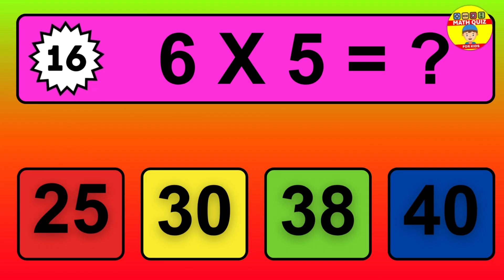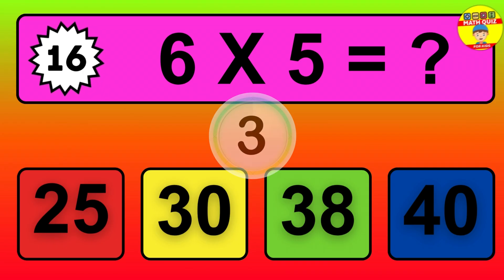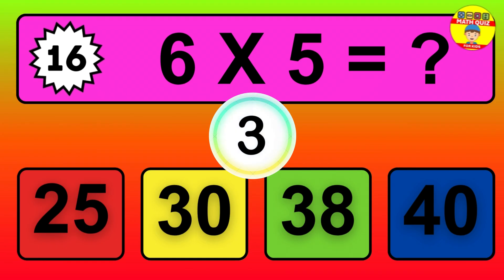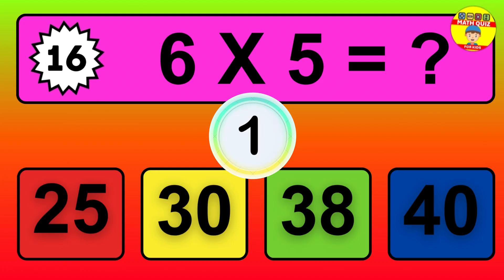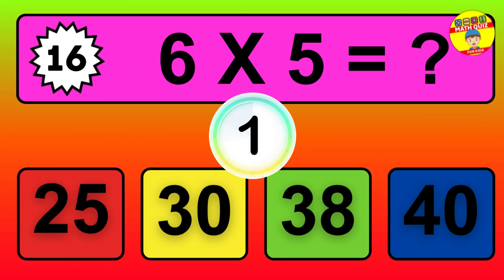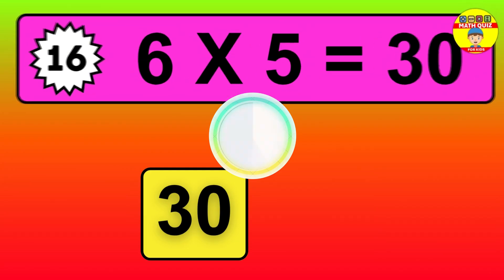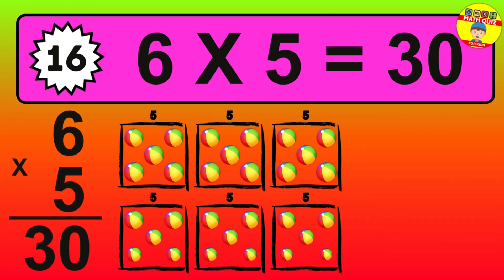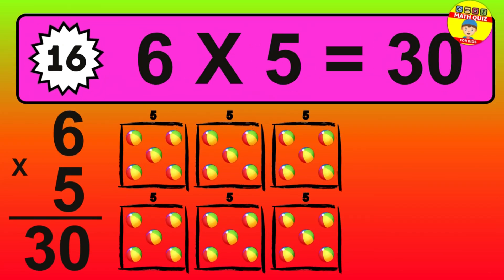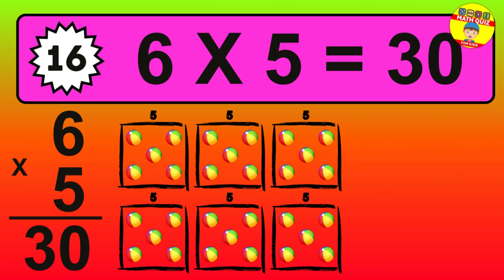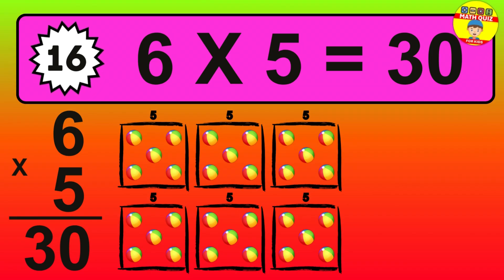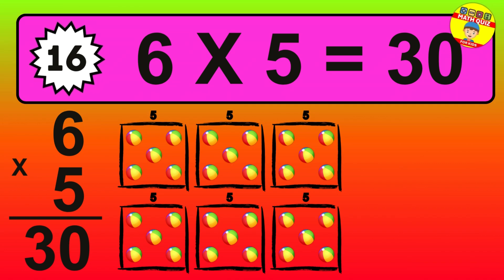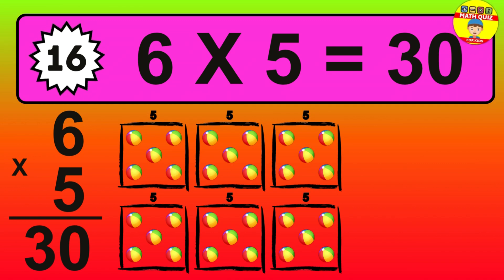Question 16. 6 times 5 equals what? The answer is 6 times 5 is 30. To calculate, we have 6 groups with 5 balls each one. So, how many balls do we have? 30 balls.